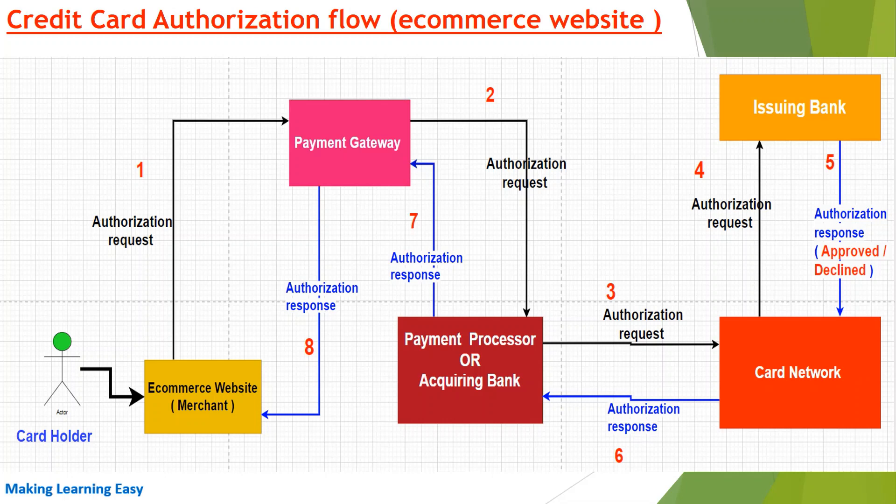Once the payment processor understands which card network to send to, it forwards the request to the card network — step three. Once the card network receives the authorization request, it also performs its own validations and checks.